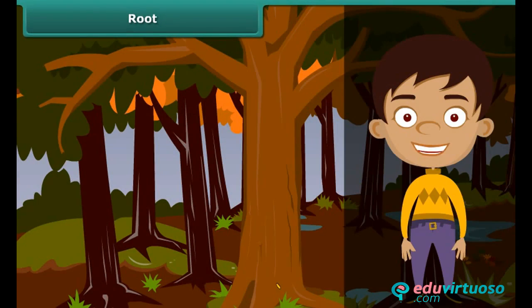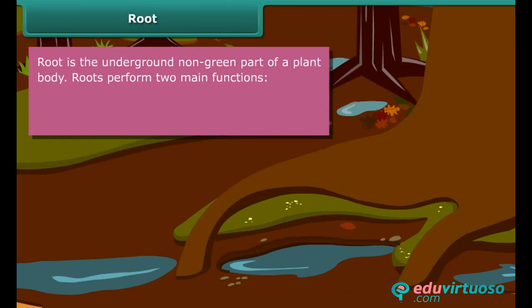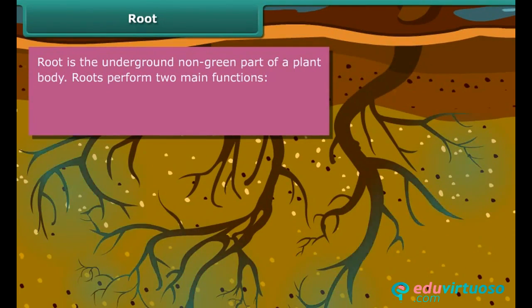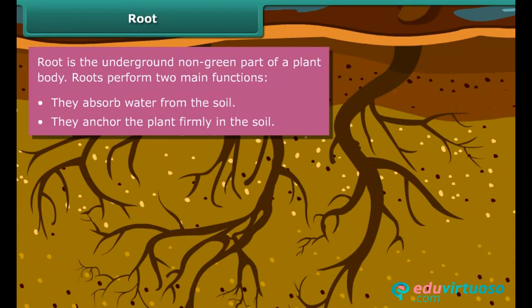Let us begin our discussion with plant roots. The root is the underground, non-green part of a plant body. Roots absorb water and minerals from the soil, which are crucial for the survival of a plant. They also attach the plant to the soil for its entire life.